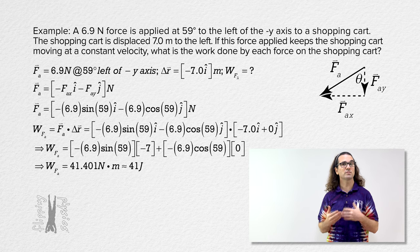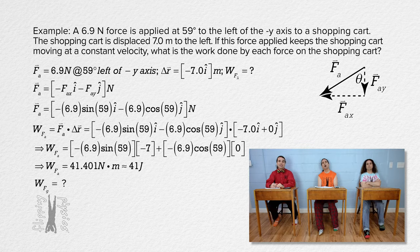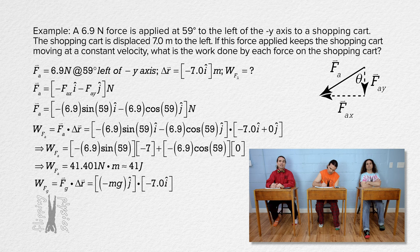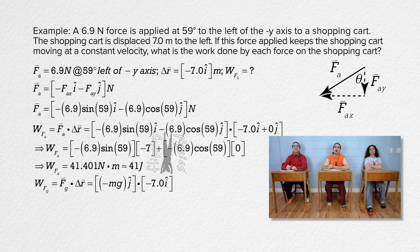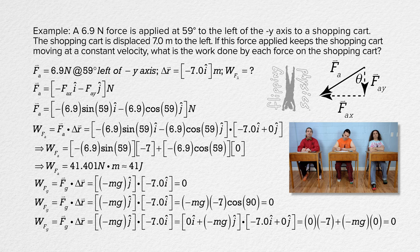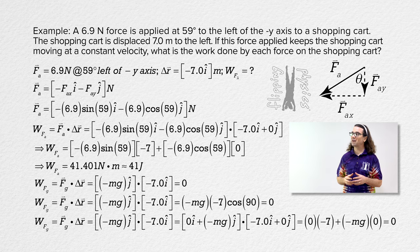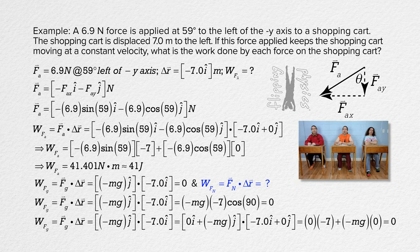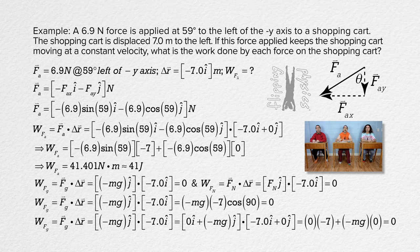Billy, please determine the work done by the force of gravity on the cart. The work done by the force of gravity equals the scalar product of the force of gravity and the displacement of the cart. The force of gravity is down, so negative mg in the j direction dot negative 7.0i — that equals zero because i and j are at 90 degrees to one another and cosine 90 equals zero. The force of gravity does zero work on the shopping cart because it is normal to the direction of displacement. And Bo, the work done by the normal force also equals zero because the normal force is in the positive j direction and also perpendicular to the displacement of the cart.